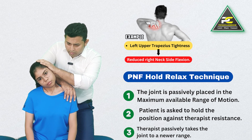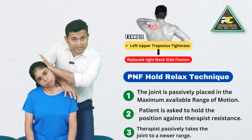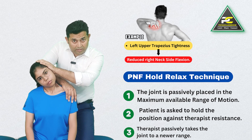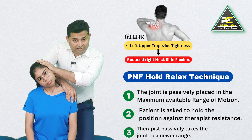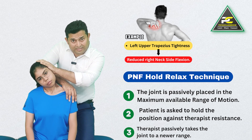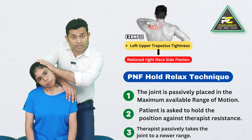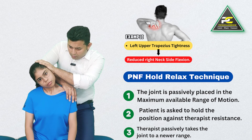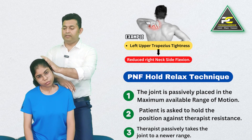It is the therapist who induces the isometric contraction, asking the patient to match the therapist's resistance. As the patient starts matching the resistance, the therapist gradually increases the effort to demand more contraction. After the hold, the patient relaxes and the therapist takes the head and neck into the newer available range.